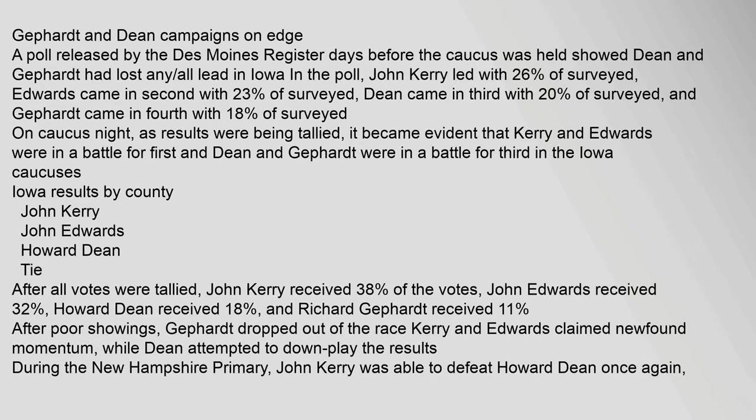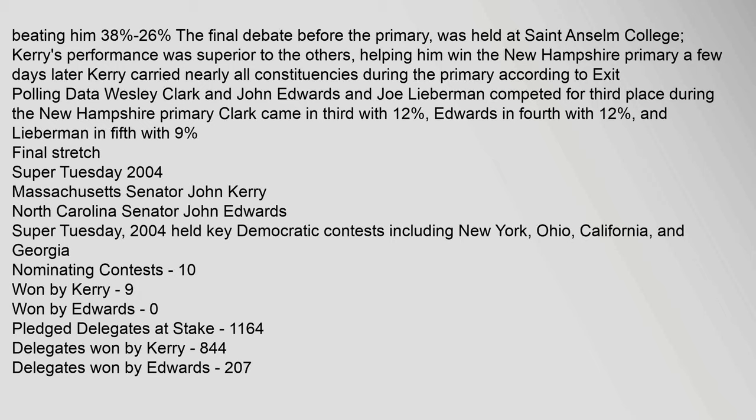On caucus night, Kerry and Edwards were in a battle for first and Dean and Gephardt were in a battle for third. Kerry beat Dean 38% to 26%. The final debate before the New Hampshire primary was held at St. Anselm College; Kerry's performance was superior to the others, helping him win the New Hampshire primary. Wesley Clark, John Edwards, and Joe Lieberman competed for third place; Clark came in third with 12%, Edwards in fourth with 12%, and Lieberman in fifth with 9%.